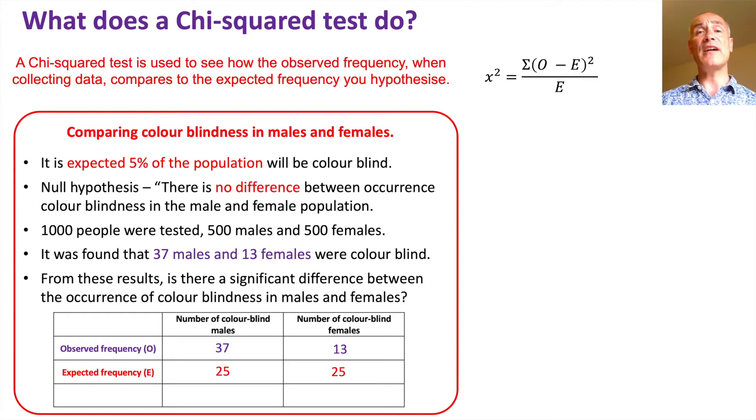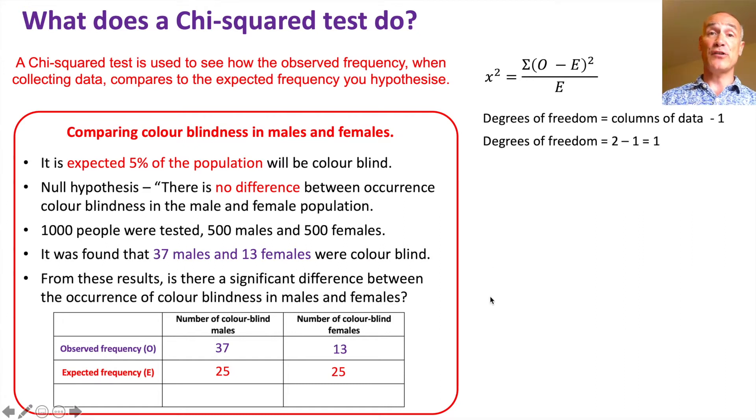Now we do the chi-squared test. To get your chi-squared value, what you do is you take the observed frequency minus the expected frequency, square it, and then divide by the expected frequency for each column, and then you sum those columns together. We also need to calculate the degrees of freedom. That is the number of columns of data minus one. We've only got two columns of data for male and female, so it's 2 minus 1 is 1 degree of freedom.